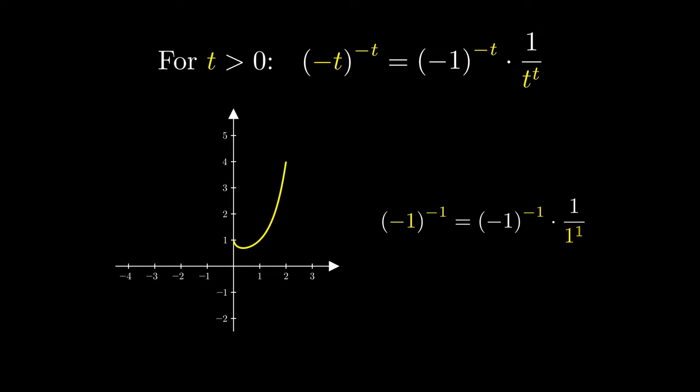When t equals 1, we do get a negative expression times 1 over 1, which gives us the exact same point that we plotted before. Plugging in t equals 2 gives us positive 1 over 2 squared. Plugging in t equals 3, we get the negative of 1 divided by 3 cubed. Plugging in t equals 4, we get the positive of 1 divided by 4 to the 4.